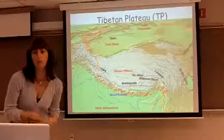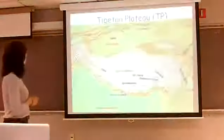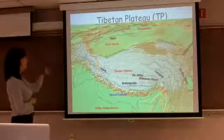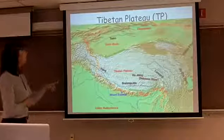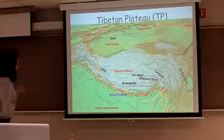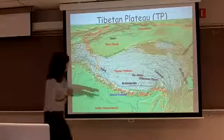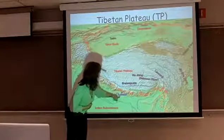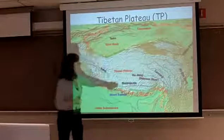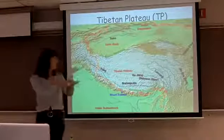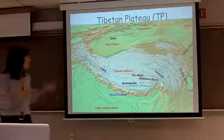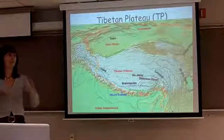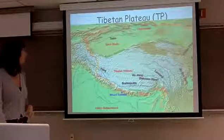For the Tibetan Plateau — this is just a map of the region — the Himalayas are here with Mount Everest marked. Then you have all this highly elevated area called the Tibetan Plateau, which is at least 4,000 meters above sea level.